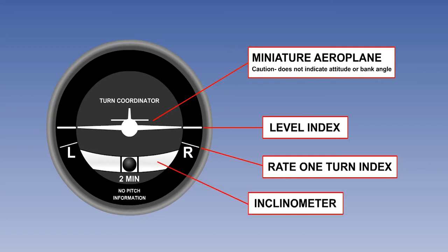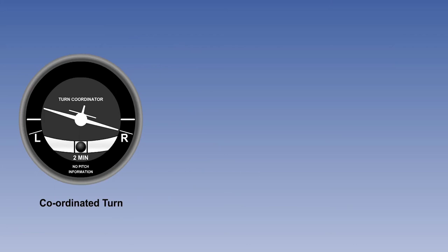The inclinometer, as already mentioned, shows the pilot if his turn is balanced. Coordinated, or balanced flight, is maintained by keeping the ball centred between the reference lines with the rudder.